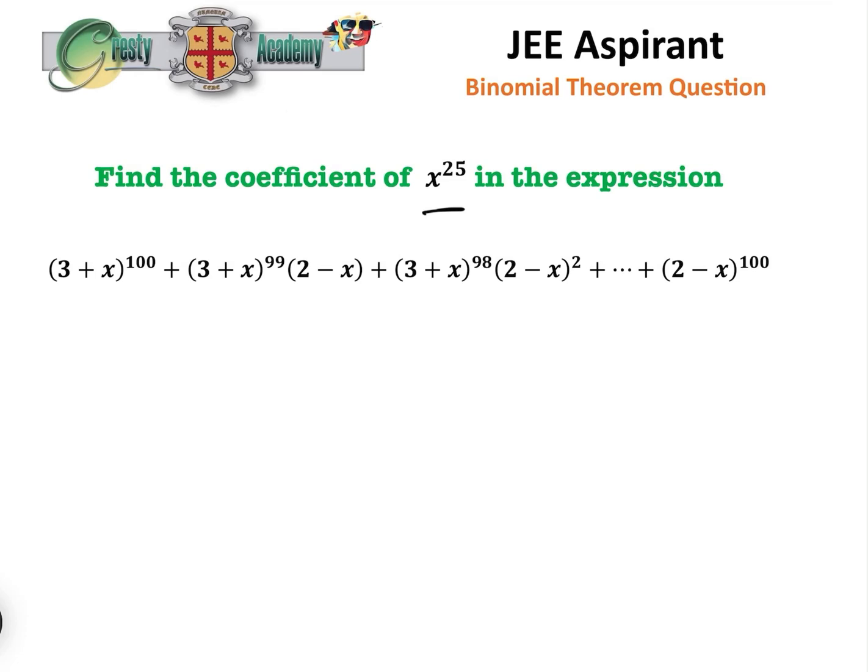The easier way is to use the expression x to the n minus a to the n over x minus a equals x to the n minus 1 add x to the n minus 2 a add x a to the n minus 2 add a to the n minus 1.